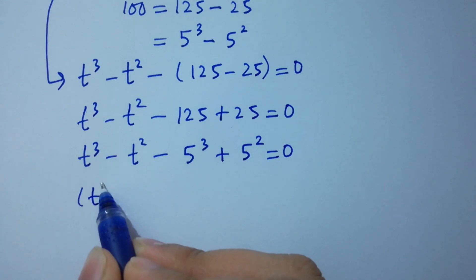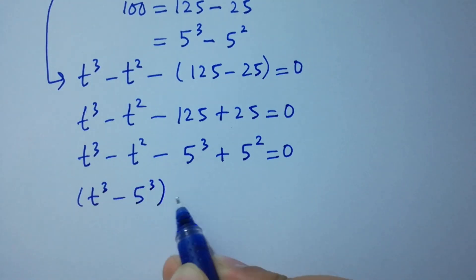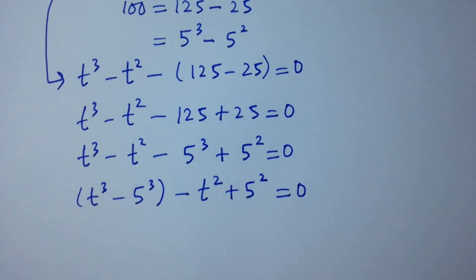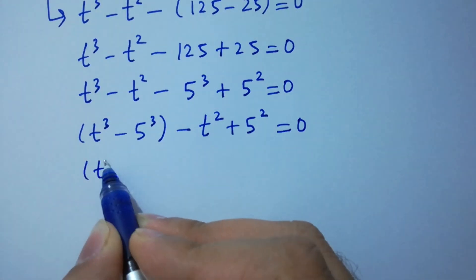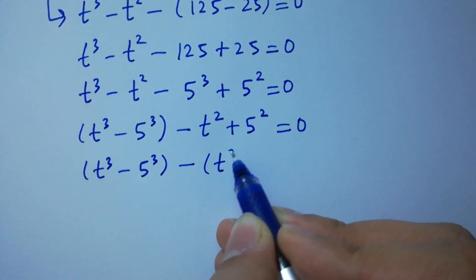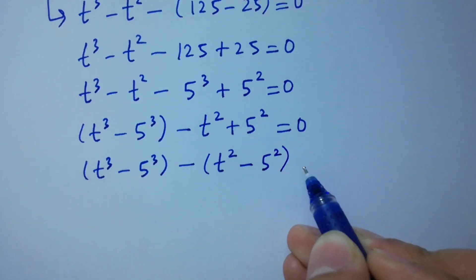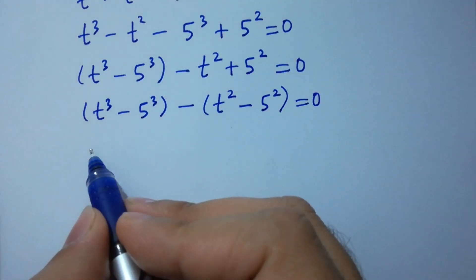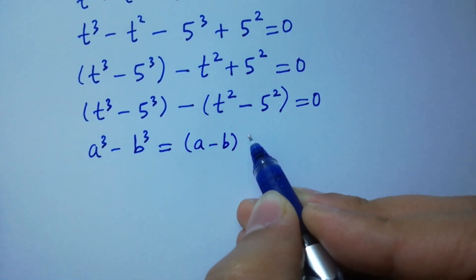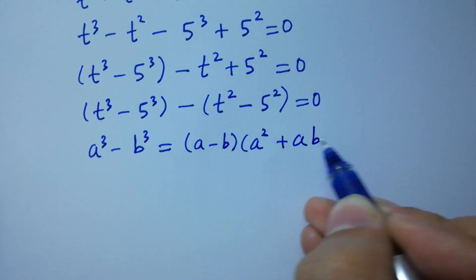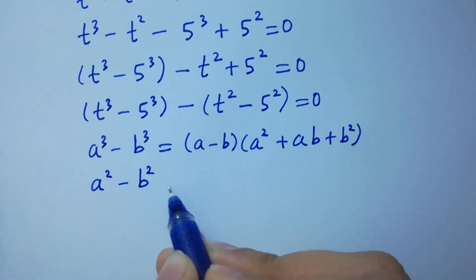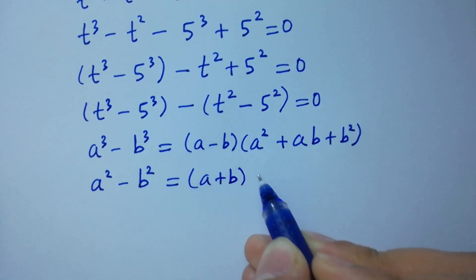This gives us t cubed minus 5 cubed minus t squared plus 5 squared equals 0. As we know, a cubed minus b cubed equals (a minus b)(a squared plus ab plus b squared), and a squared minus b squared equals (a plus b)(a minus b).